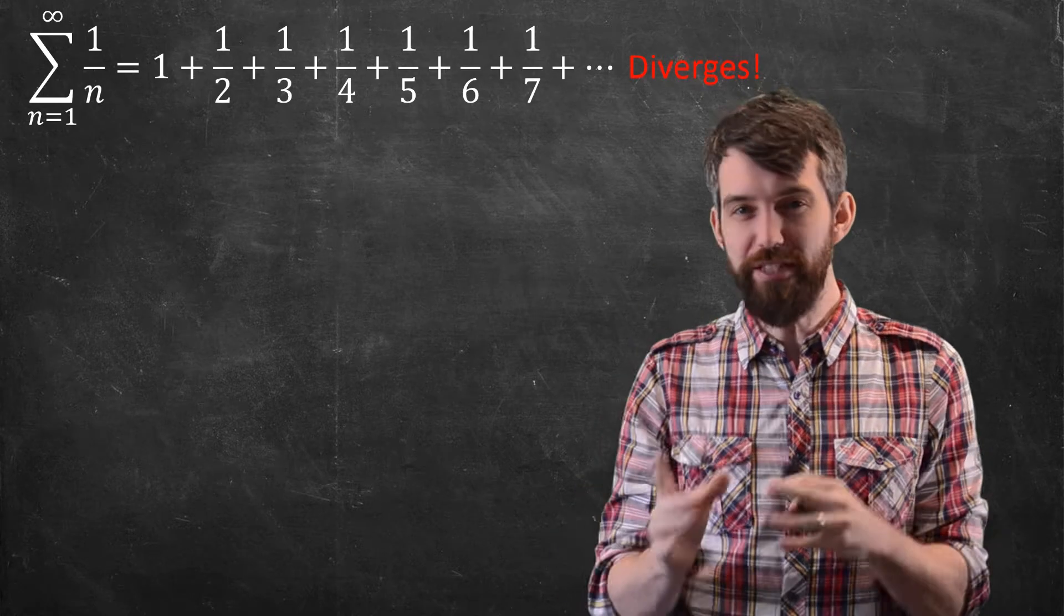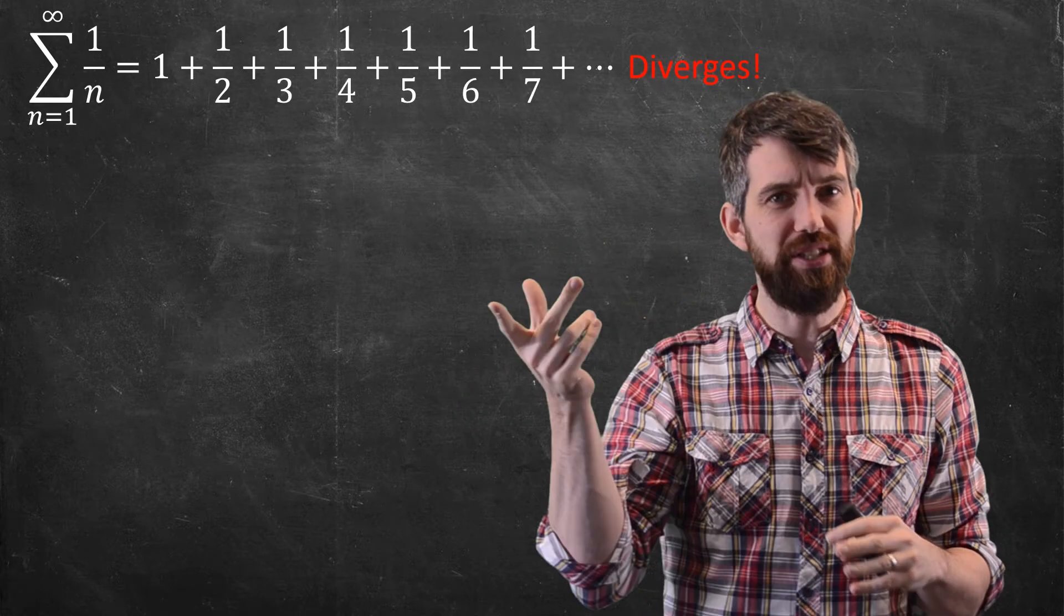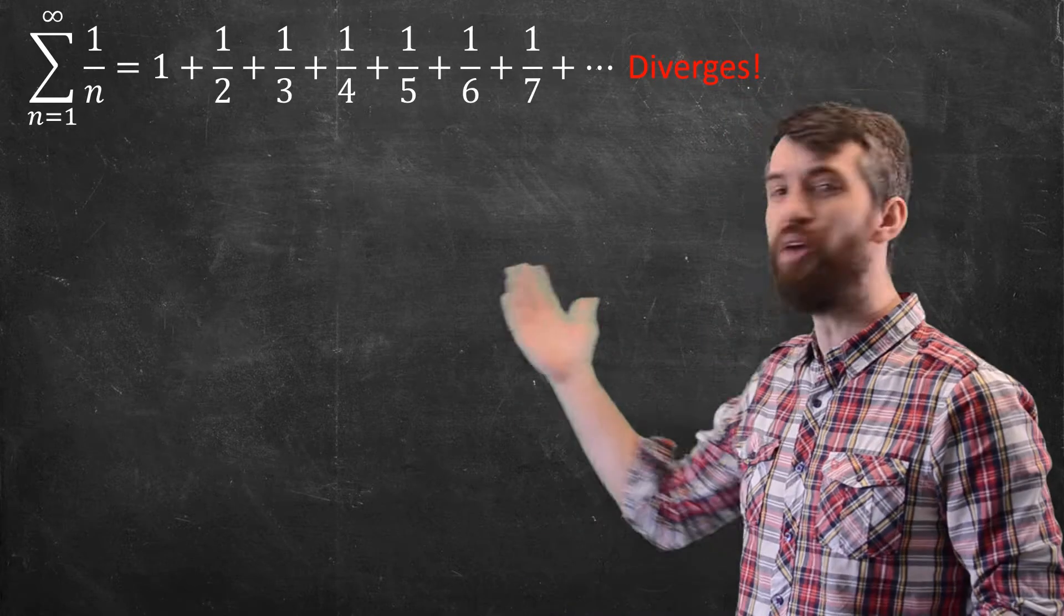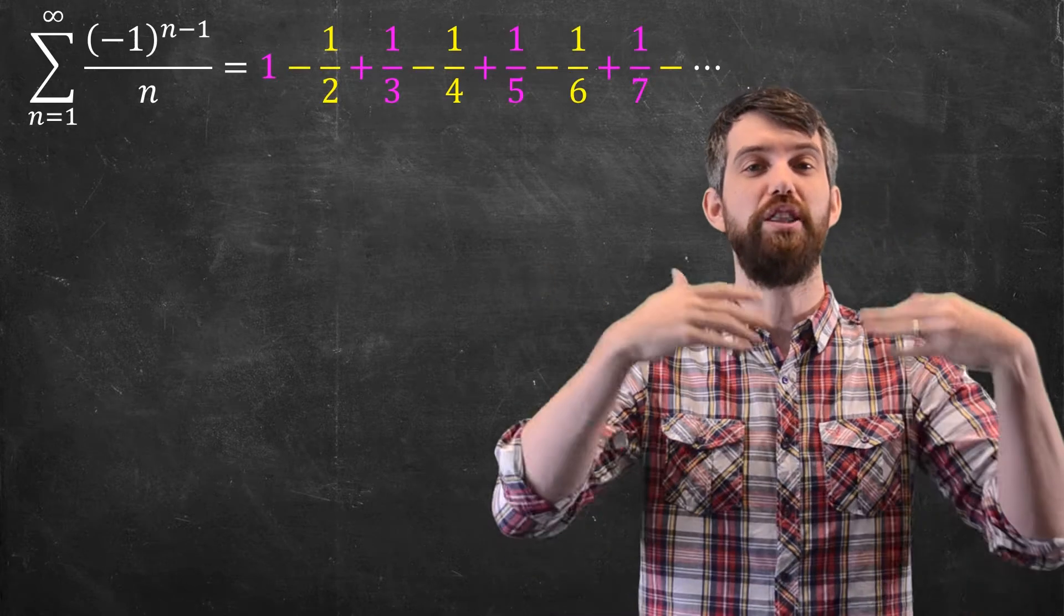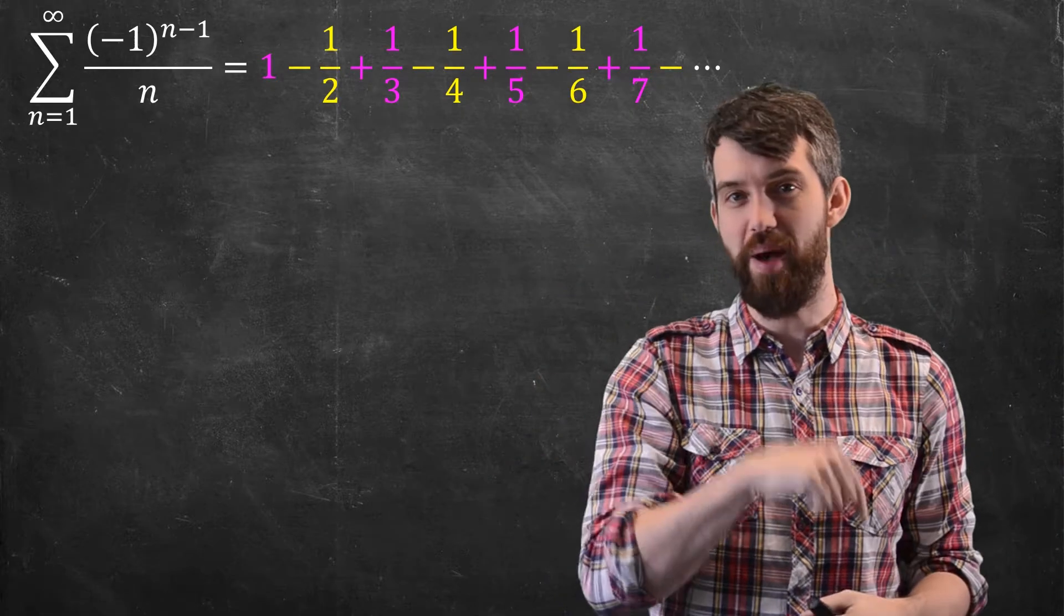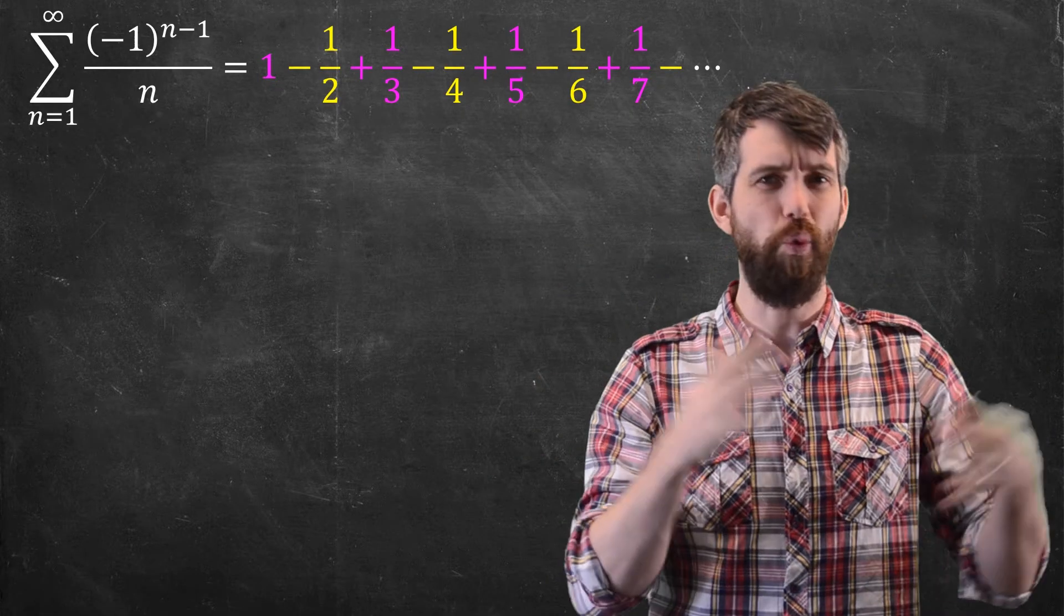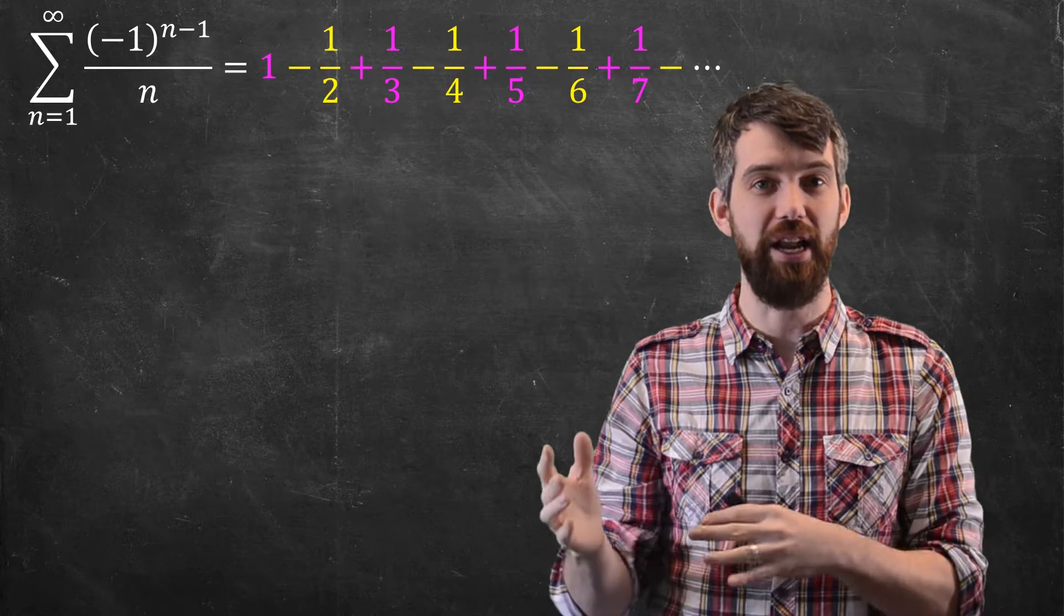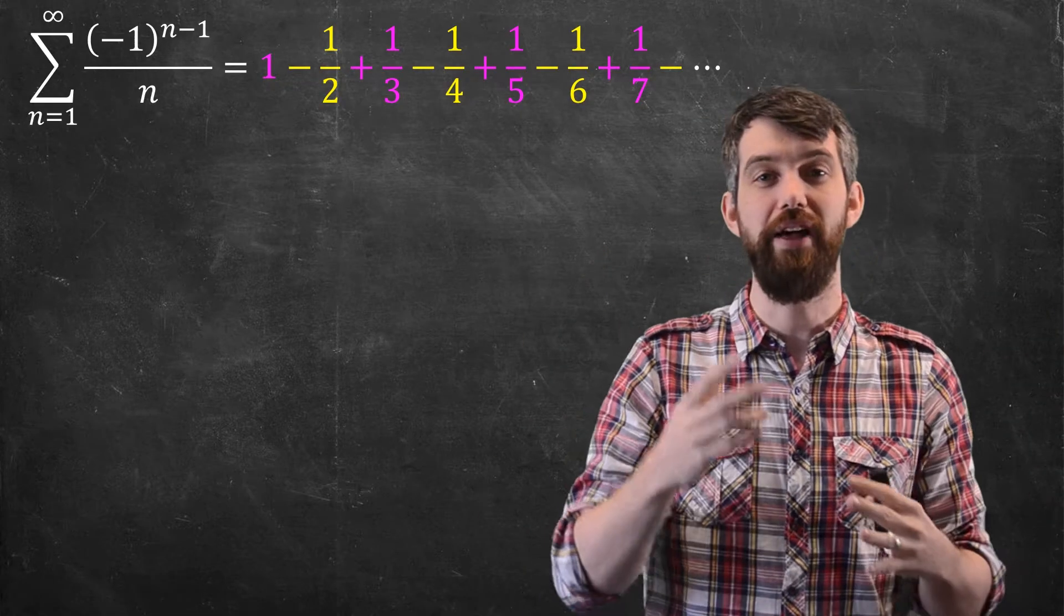But in this video, I want to consider a twist on this harmonic series, an alternating harmonic series. This is the sum of (-1)^(n-1) divided by n. What that (-1) term does is make every other sign negative: positive, negative, positive, negative, and so on.